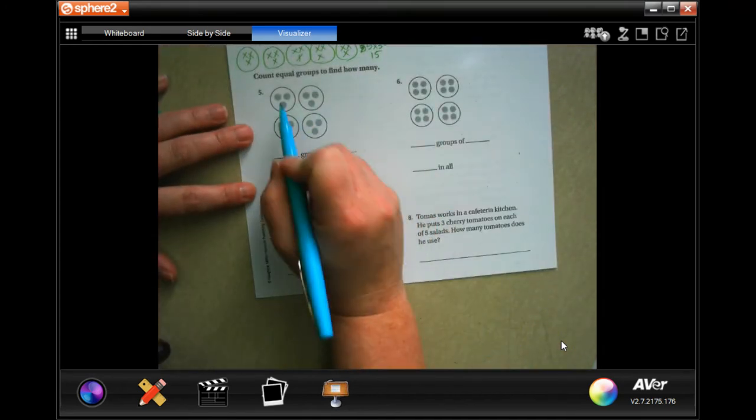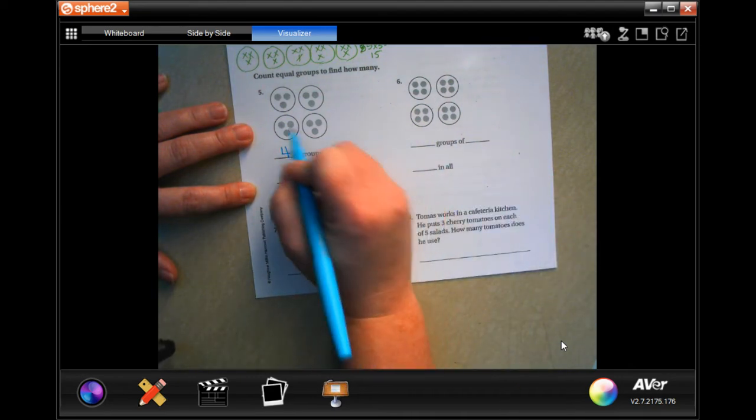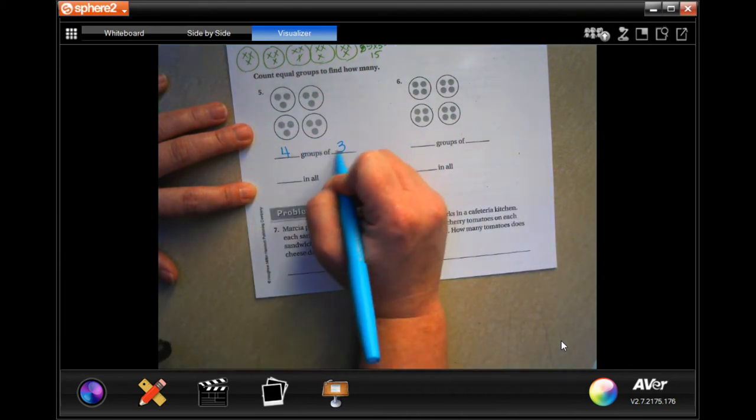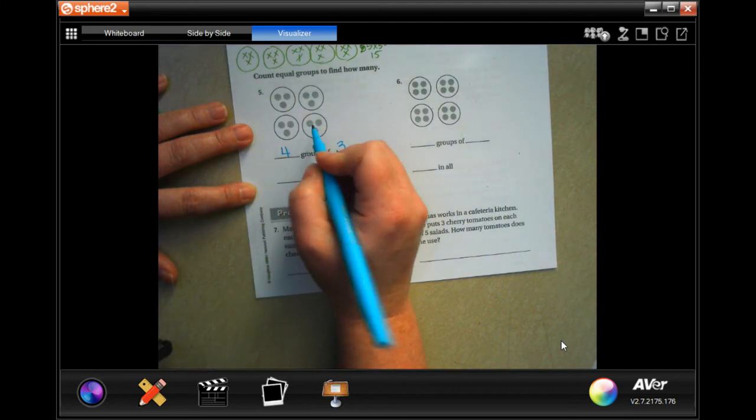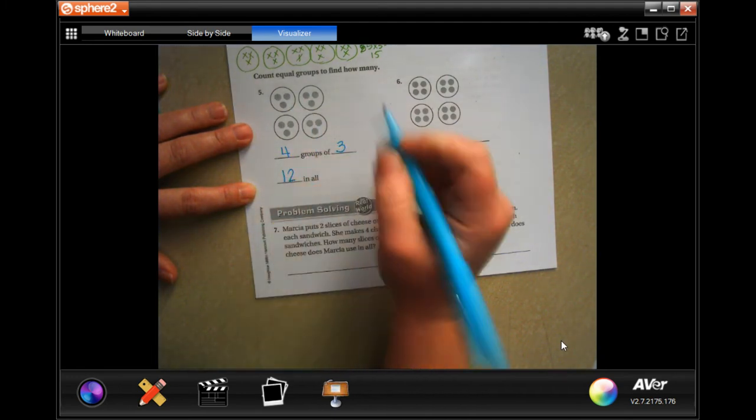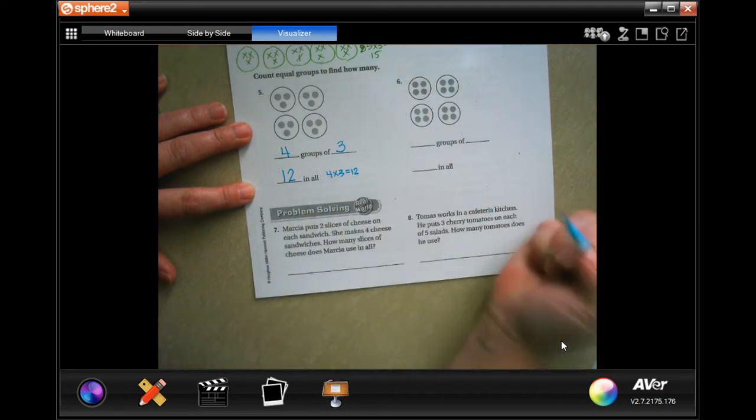Okay, this one we have one, two, three, four groups. And the four groups each have one, two, three inside of them. So now three, six, nine, twelve. So four times three is twelve.